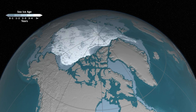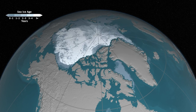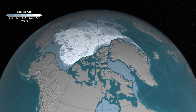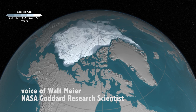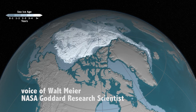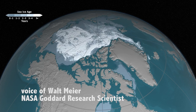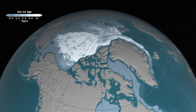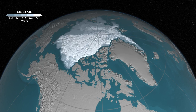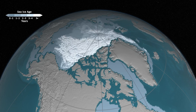In this animation, we're taking Arctic sea ice into the third dimension. Here, we're looking at the ice age, which is an indicator of thickness. Generally, older ice is thicker ice.